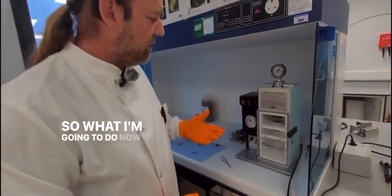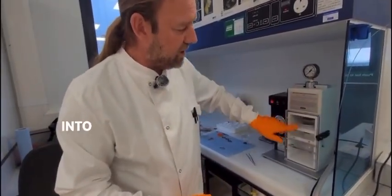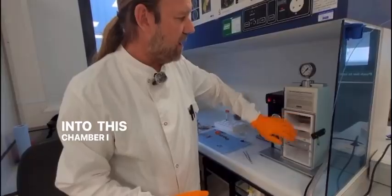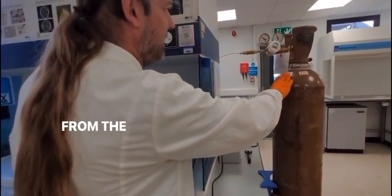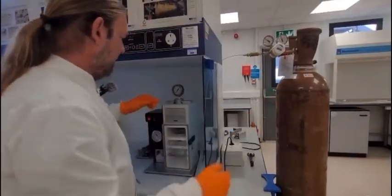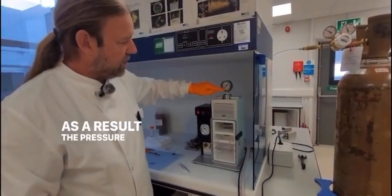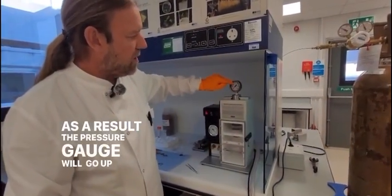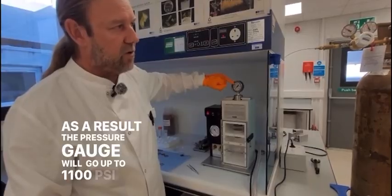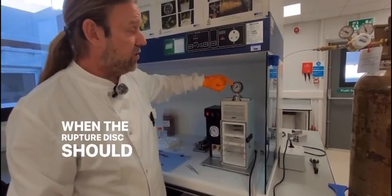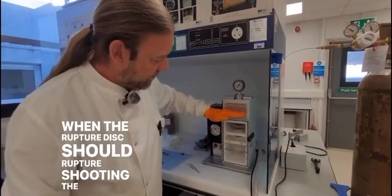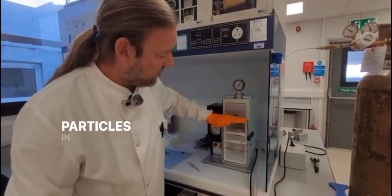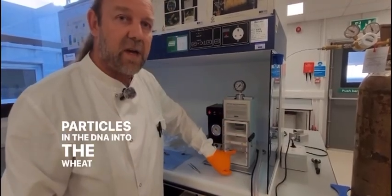So what I'm going to do now is I'm going to draw a vacuum into this chamber. I will then start to build up pressure from the helium tank here. The pressure gauge will go up and at 1100 psi, the rupture disc should rupture, shooting the gold particles and the DNA into the wheat embryos.